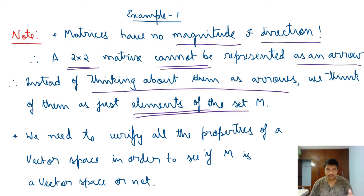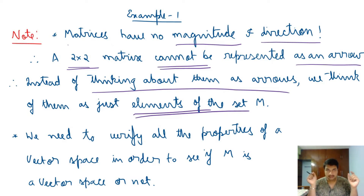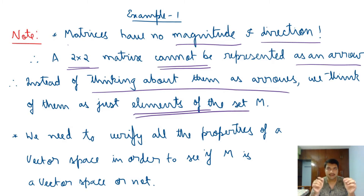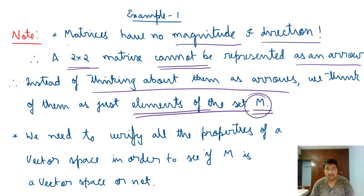Arrows in three dimensions do form a vector space and are therefore also vectors, but they are just one example. As we verify whether 2×2 matrices form a vector space, the result can be generalized to N×M matrices as well. The key takeaway is that you should not think of an arrow whenever you hear the word vector — vectors are simply elements of a defined set.